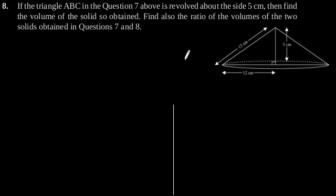As mentioned in the question, the right angle triangle ABC is revolved about the side 5 cm. A cone will be formed having radius 12 cm, height 5 cm, and slant height 13 cm.